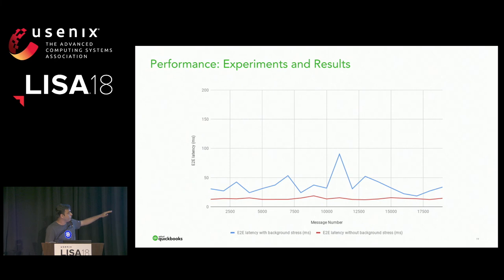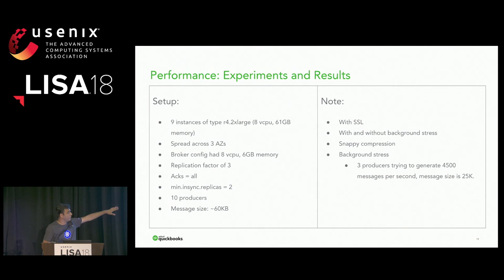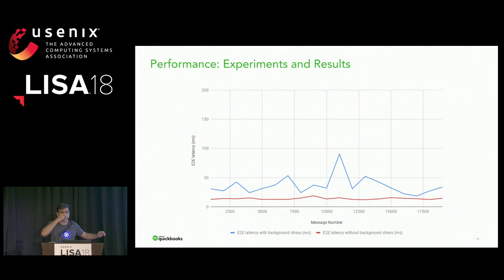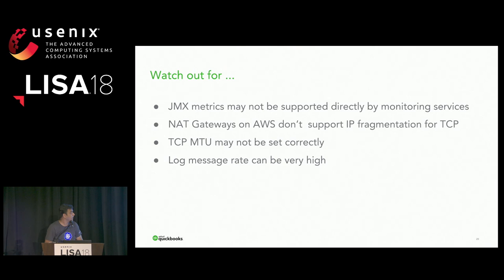With background stress — in the realistic scenario with more work happening on the cluster — the blue line shows performance. A few other producers producing random messages of about 4.5 kilobytes were running as stress. With that running alongside one producer and one consumer, we were still at an average of about 35 to 40 milliseconds — well clear of our target of 100 milliseconds.